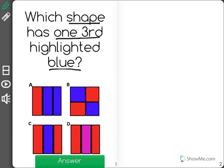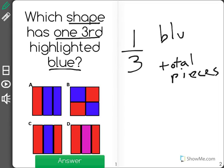Now one-third is the same as saying one out of three, which means that there's a shape here that is broken up into three total pieces and only one of those pieces is going to be blue. So we're looking for a shape that has one blue piece out of three total pieces.